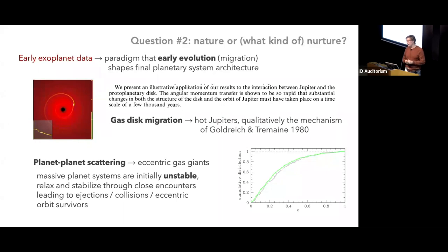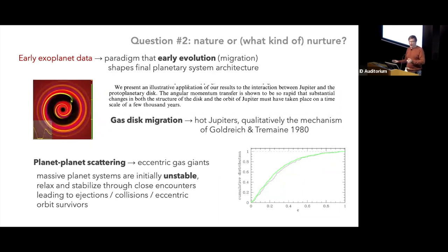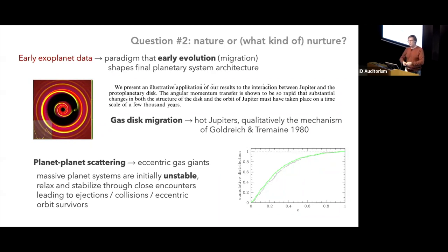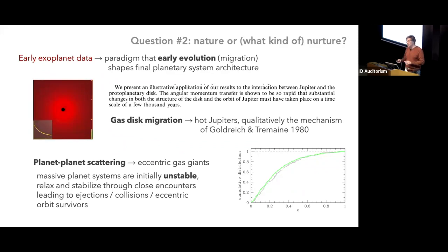Gas disk migration was considered a good explanation for hot Jupiters. The next planets found in the mid-1990s were further out with quite eccentric orbits. An immediate explanation was that planetary systems were initially closely packed, became unstable, had close encounters and collisions, some planets were ejected, and survivors ended up with eccentric orbits. Simple numerical experiments — a few Jupiter-mass planets on circular but closely-packed orbits let to evolve for millions or billions of years — produce a distribution of eccentricities that matches observations well. It seemed the matter was done and dusted.